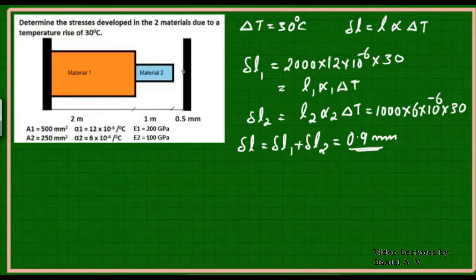But here the problem is that after elongating for a value of 0.5 mm, its elongation is restricted. This member can no more elongate than 0.5 mm. So the amount of elongation restricted is 0.9 - 0.5 = 0.4 mm.